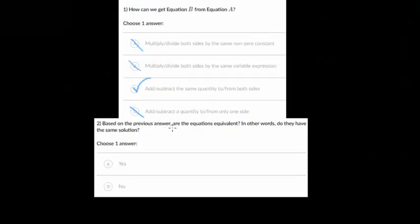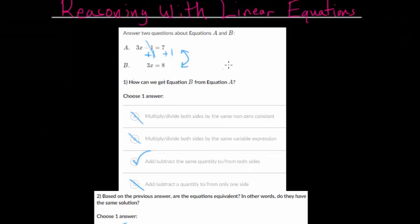So we added the same quantity to both sides. We added 1 to both sides. And since that's a valid operation, and we did get back something that is true, we can answer yes to the second question. Based on the previous answer, are the equations equivalent? In other words, do they have the same solution? And the answer is yes. In fact, if we wanted to, we can even find the solution. Just from here, divide each side by 3, and you get that x is 8 thirds. But 8 thirds would solve both of these equations. And these questions don't ask you to actually find the solution. They just want to know if you understand the reasoning on how to get to the solution.